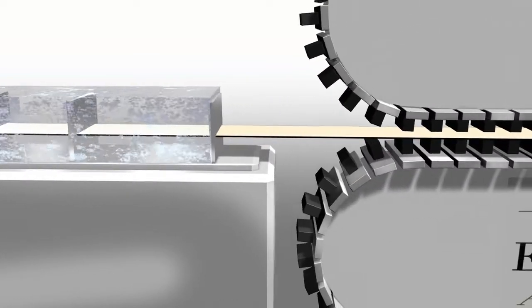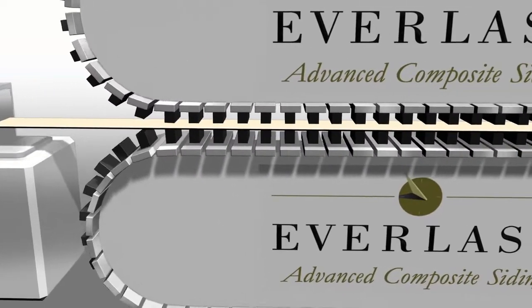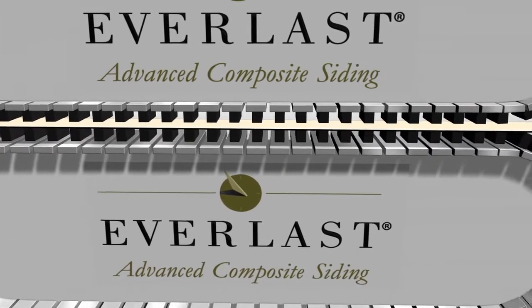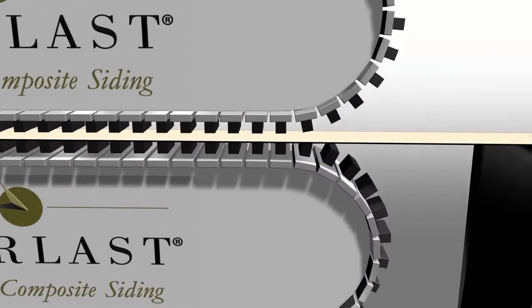Since the extrusion process involves pushing material through the die, a caterpillar puller is used at the end of the line to sequence the movement of the profile through the process.